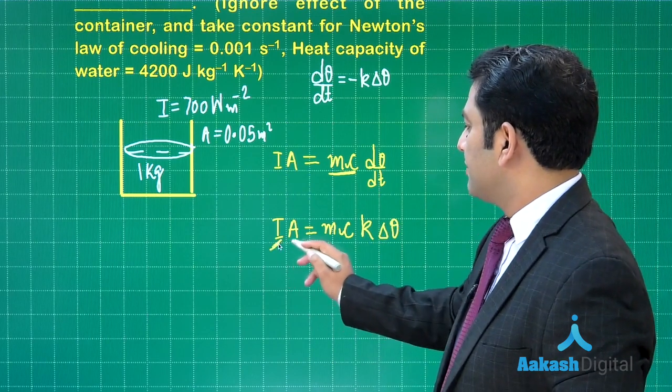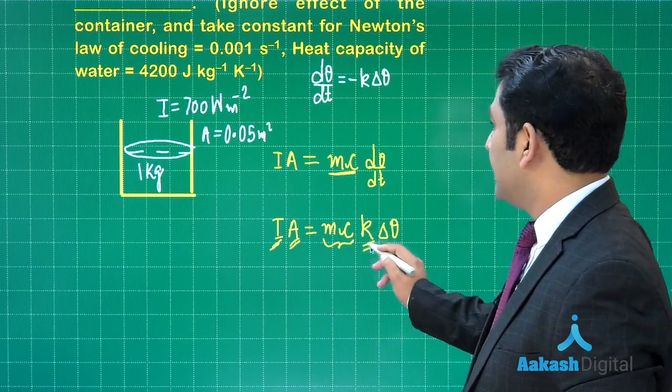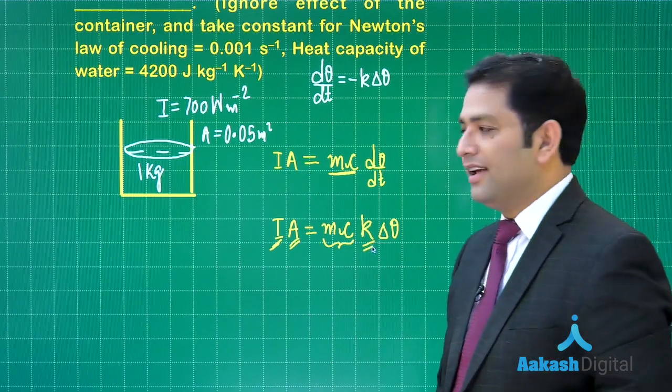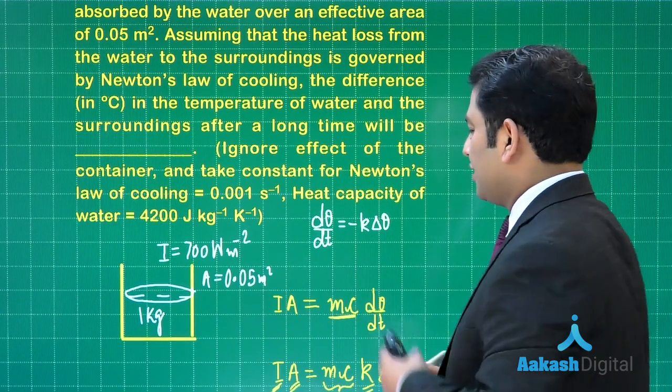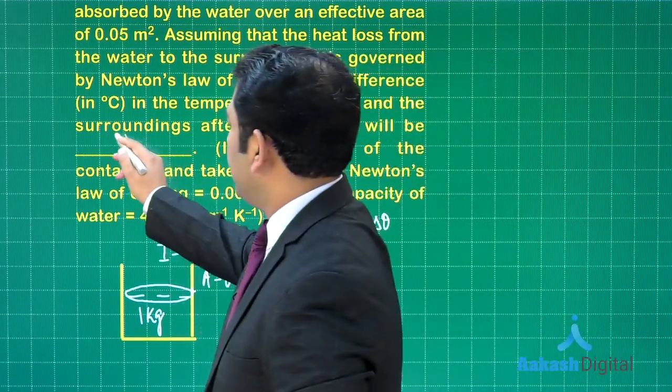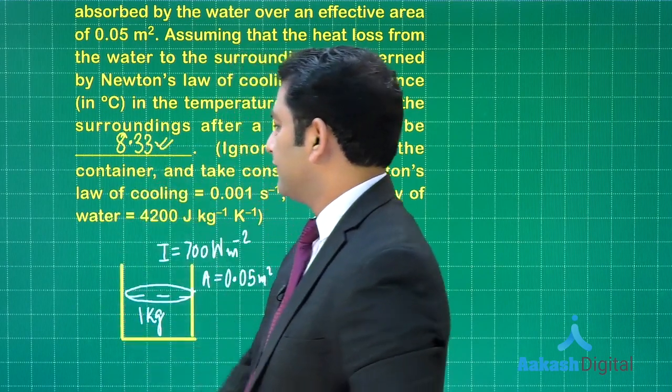So now i a is equal to m c, and d theta by dt is k times delta theta. So now everything is given. This is 700, 0.05, this much is 4200, the value of k is given 0.001, and we got to calculate the value of delta theta. And when you do that, you get 8.33 as the correct integer for this.